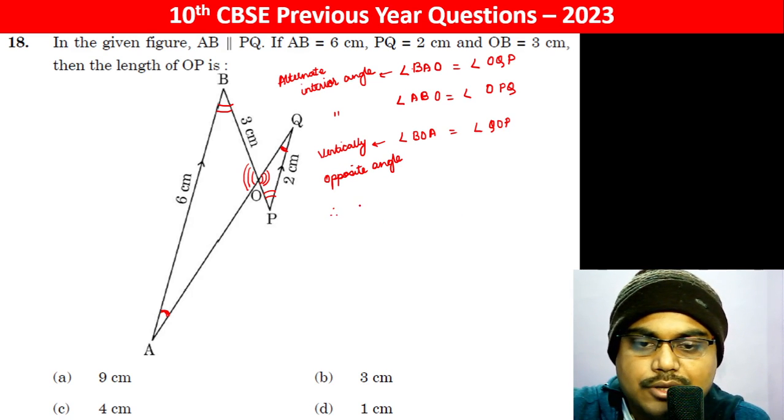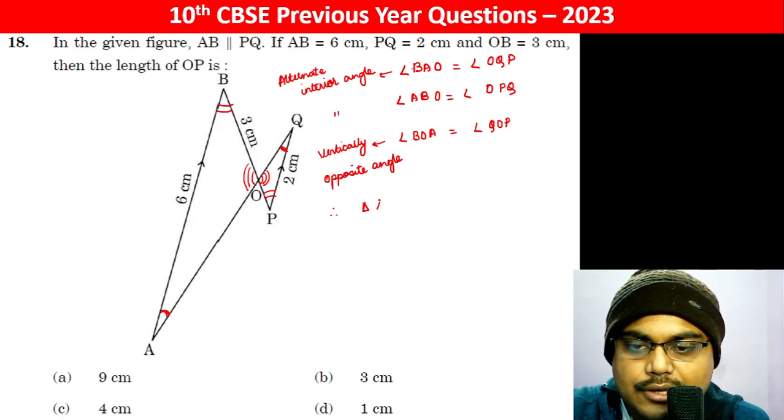This is correct. Therefore, triangle ABO is similar to triangle PQO.